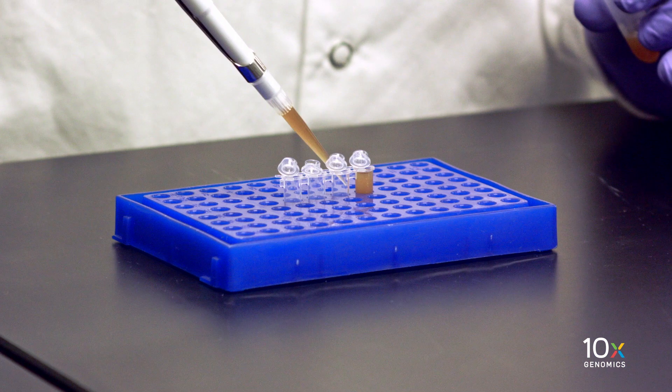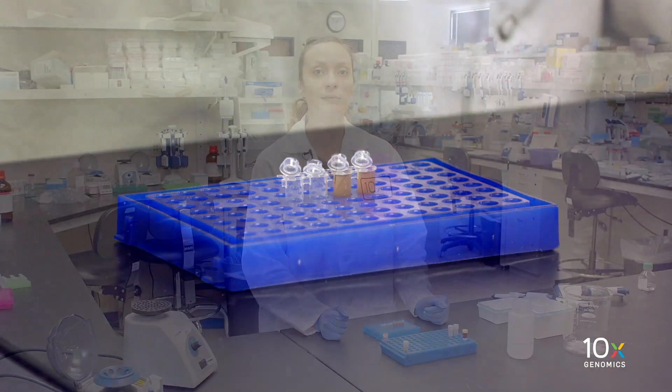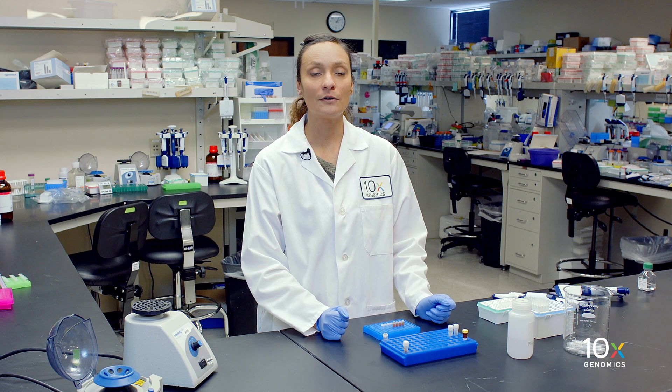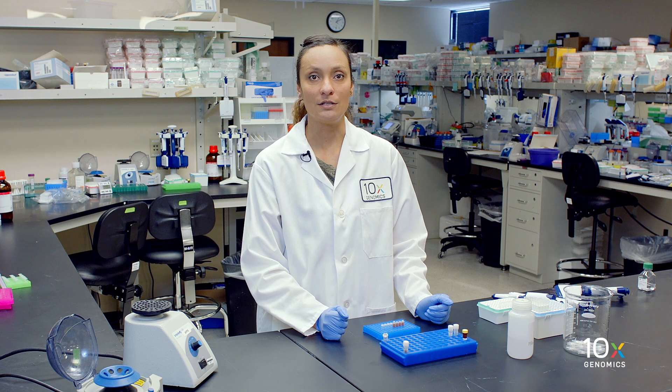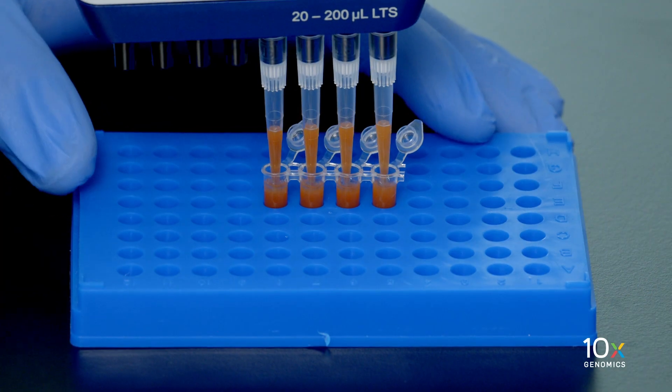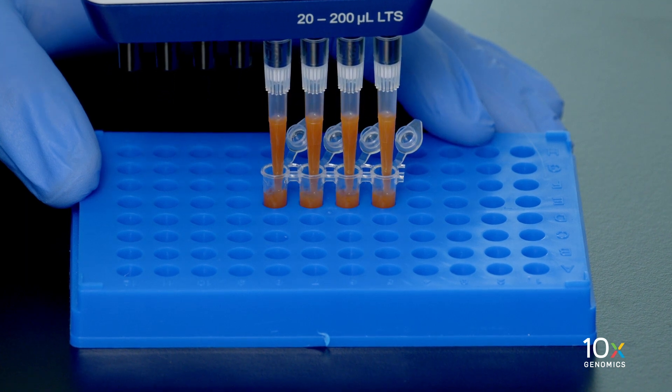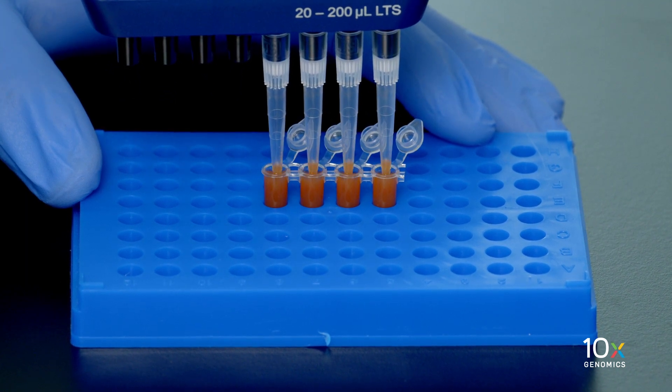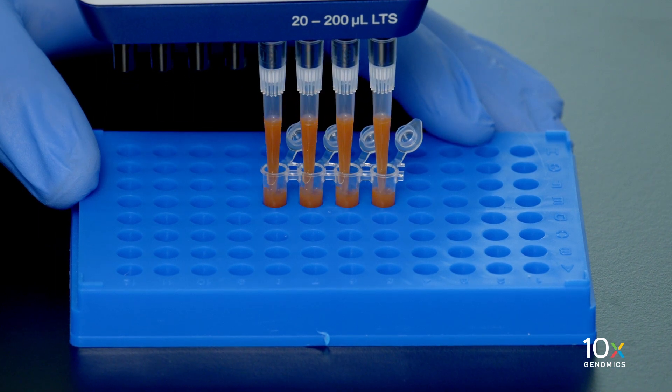We immediately add 200 µL DynaBead cleanup mix to each sample. If the mix has been sitting for any period of time, be sure to vortex it again before adding it to each of the samples. We pipette mix 10 times with the pipette set to 200 µL. Then incubate at room temperature for 10 minutes. Do not cap the tubes at this point because they are too full.